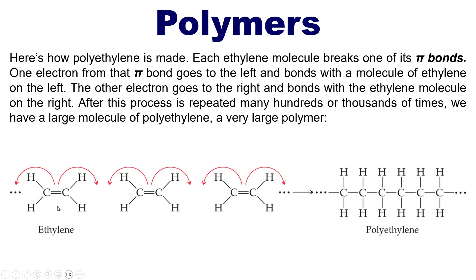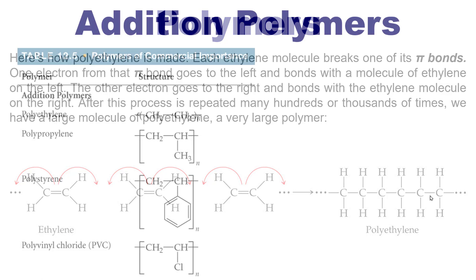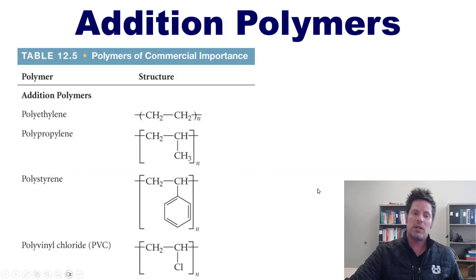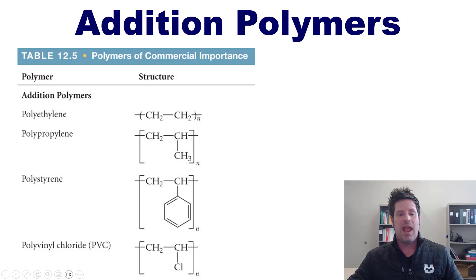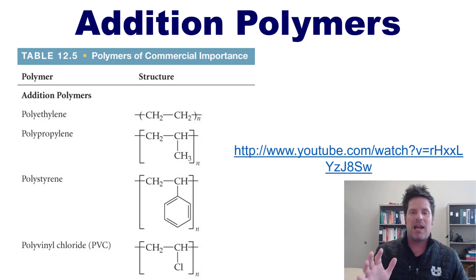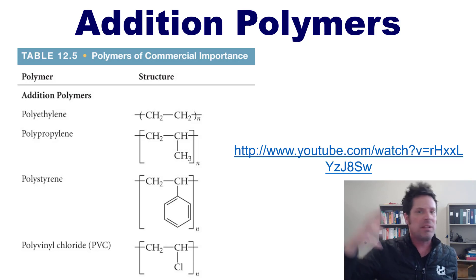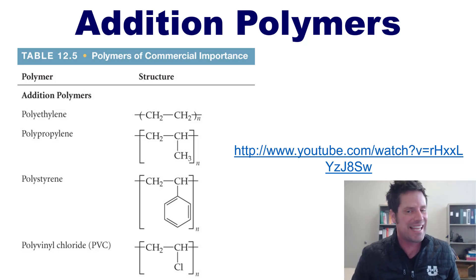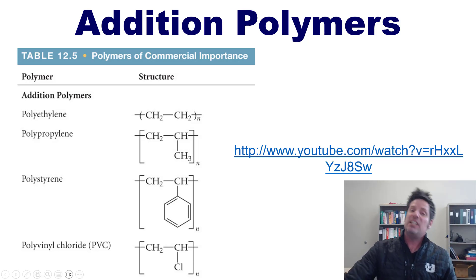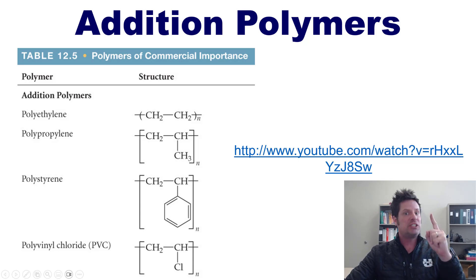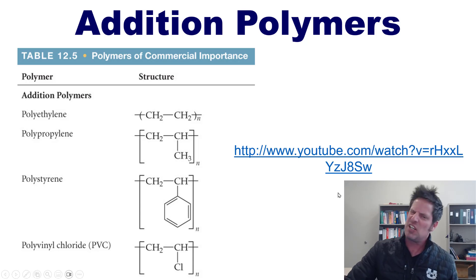This kind of polymer — made of a single monomer whose structure contains a carbon-carbon double bond — is called an addition polymer. This table from our text shows the structures of a few different addition polymers. There is also a YouTube video linked in the description below that gives additional insight into polymerization and polymers — I highly recommend you click it because it's a great video.